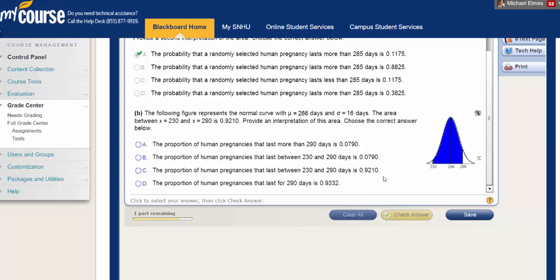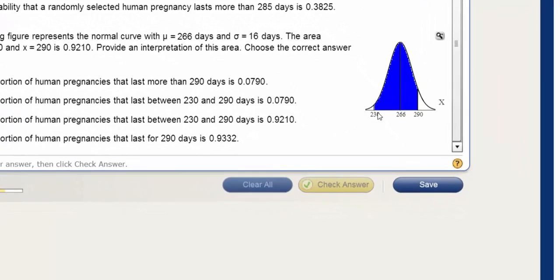Hello, class. In the last video, we used StatCrunch to find the area to the right of a value under the normal curve. In this video, I'd like to find the area under the normal curve between two values using StatCrunch.